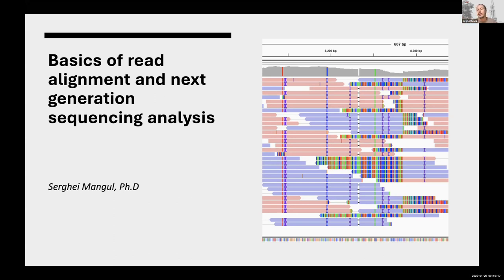Especially now because we did telomere-to-telomere sequencing — a big global consortium where people filled the gaps — so now we have a quite good version of the human genome. But that's like one individual. In general, that's a very active area of research. There are open questions, for example, do you need a population-based reference? Now we have one reference based on several individuals, but we know humans are different, especially across ancestry groups and ethnicities.